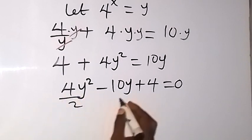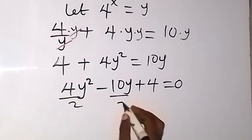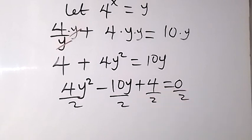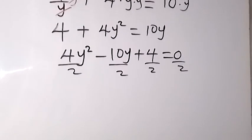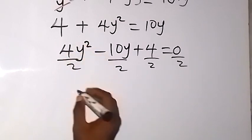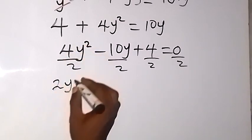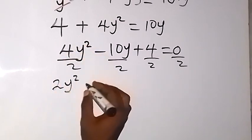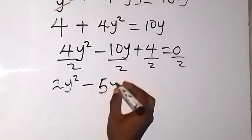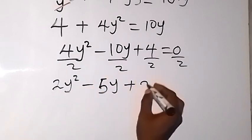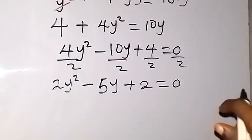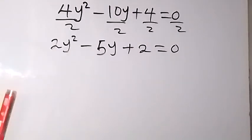We can simplify by dividing both sides by 2. Dividing each term by 2 gives us 2y squared minus 5y plus 2 equals 0.